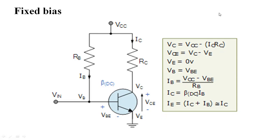This is the circuit for fixed bias. The transistor collector is connected to a resistance present within the power supply — that is the collector resistance. Another base arrangement is connected with the source VCC. This is a very simple type of bias: fixed bias. The emitter terminal is connected to ground, and the input is at the base. Current coming into the base will cause fluctuation.